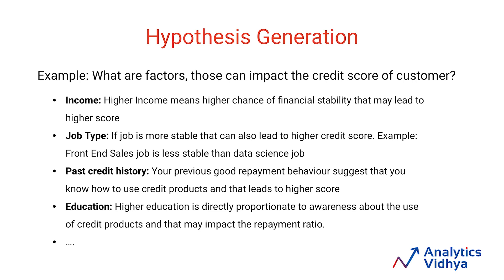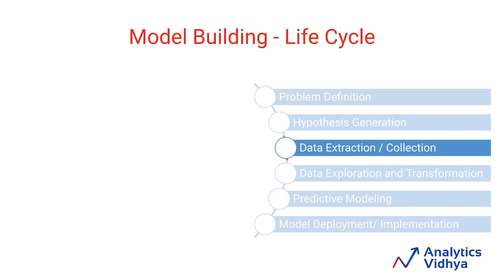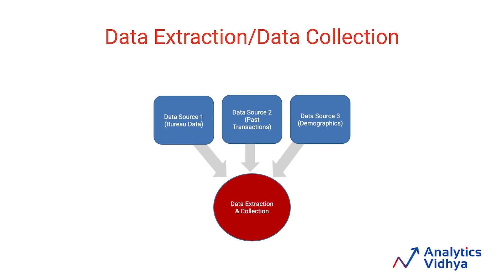Once you have defined the hypothesis, you go ahead and collect the data from various sources. If you have done your hypothesis building well, this part should be straightforward — you already know what you are looking for. You should try and collect data from as many sources as possible to either prove or disprove your hypothesis. When you look at the data, you might come across a few more hypotheses which can improve your model. For the credit card example, we can collect data from demographics, transaction history, payment history, credit score from the credit bureau, or competition pricing.